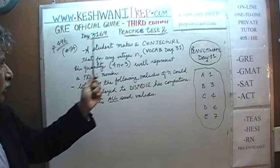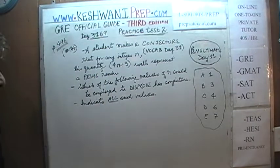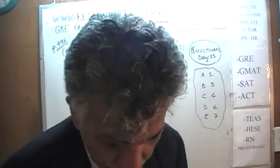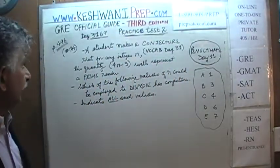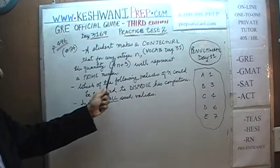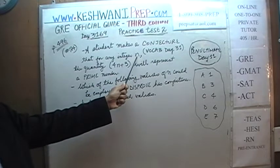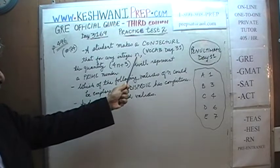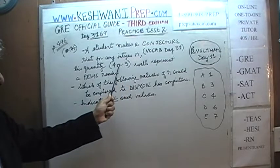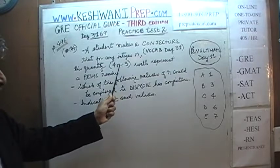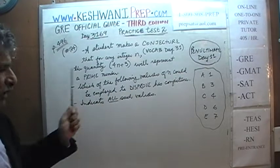We are on test number two, page number 496, problem number 24. The problem says that a student makes a conjecture that for any integer n — a whole number — the quantity 4n plus 3, whatever that whole number is, if you multiply it by 4 and add 3 to it, will represent a prime number. That is his conjecture.